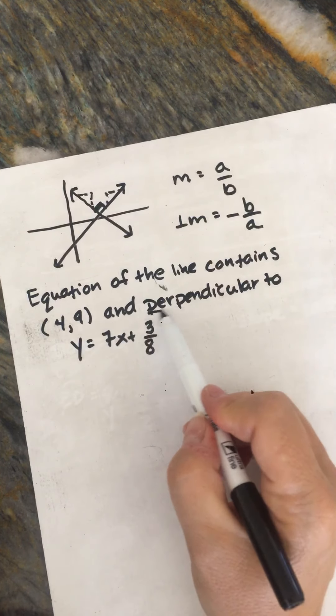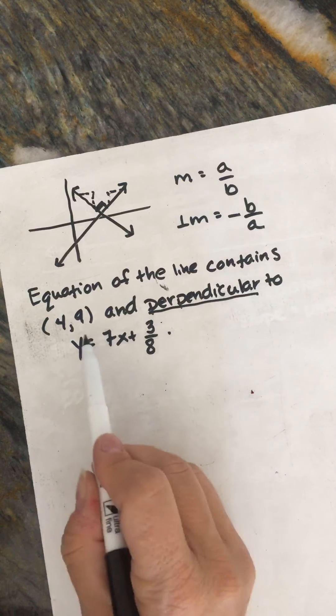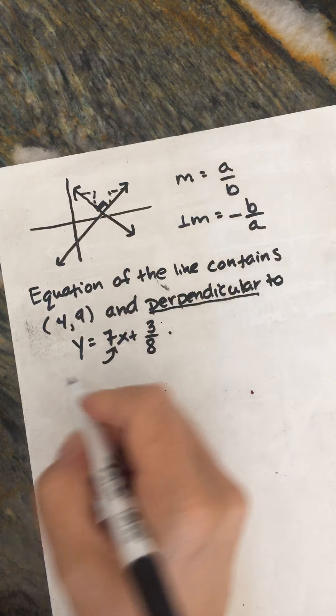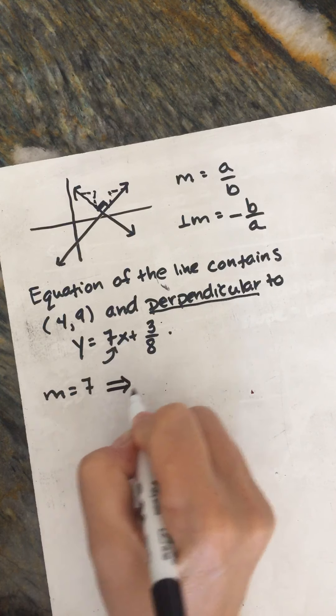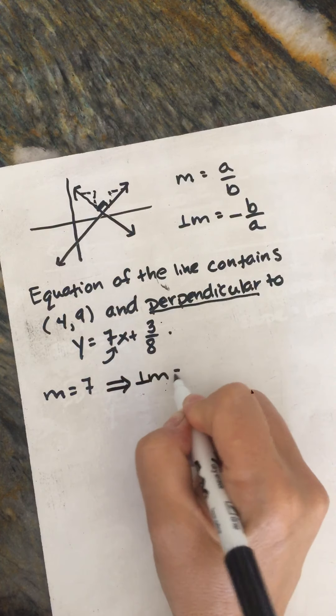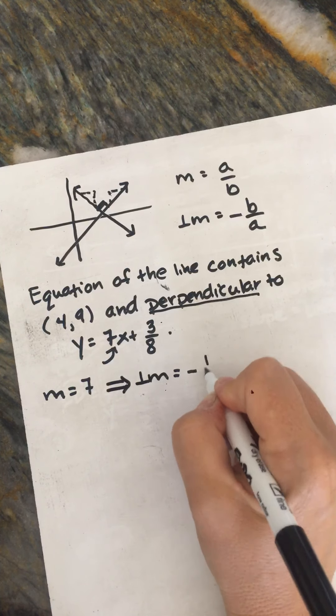So we're looking for perpendicular. So we need to find the really important piece of information here, which is our slope. So the slope is 7, but we need to make it a perpendicular slope. So we're actually going to have -1/7.